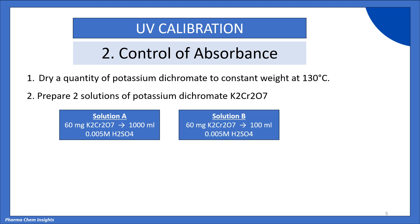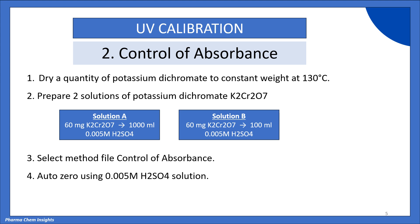Then we prepare Solution B. We weigh 60 mg of potassium dichromate and transfer to a 100 ml volumetric flask, dissolve in 0.005 molar H₂SO₄ solution, and make up to volume with the same. After that, select the method file 'Control of Absorbance' in the instrument, then perform auto zero using 0.005 molar H₂SO₄ solution as blank.